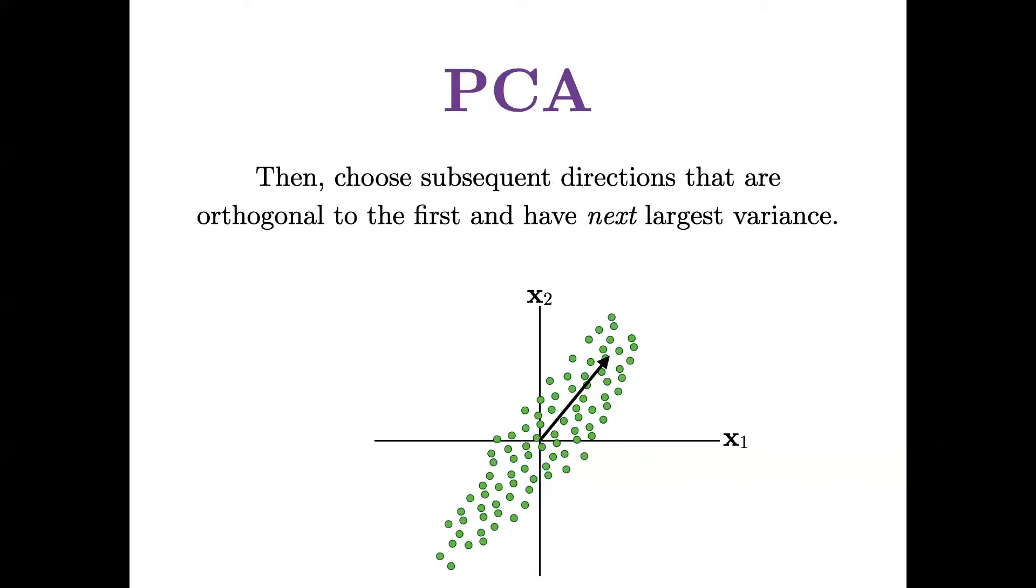And what we would do next is choose subsequent directions for the subsequent axes that are orthogonal to the first and have the next largest variance. Of course, when we're in this two-dimensional image, we only have one choice for that direction of next largest variance because it has to be orthogonal to the first.